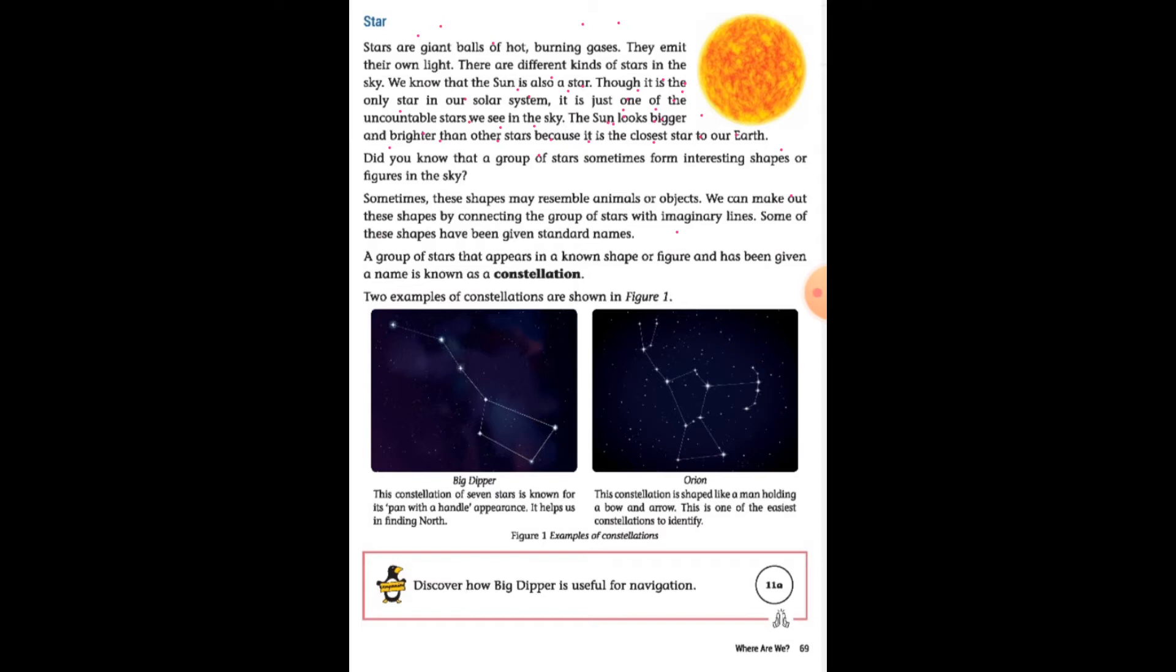Did you know that a group of stars sometimes form interesting shapes and figures in the sky? When we are at night on our terrace or somewhere where we can easily see the sky, we can see and say 'look, it is a rabbit, it is a shape of an animal, a teddy bear, a flower.'